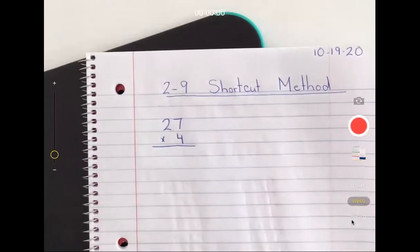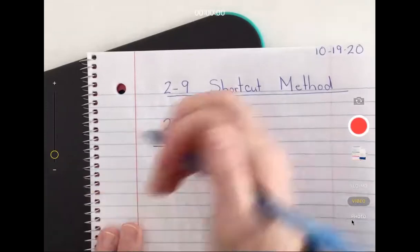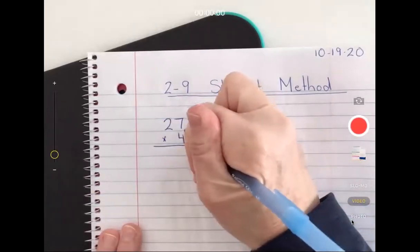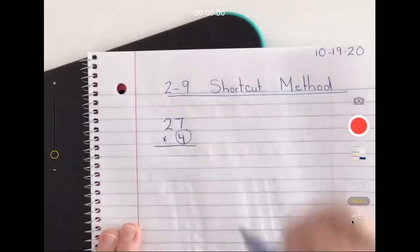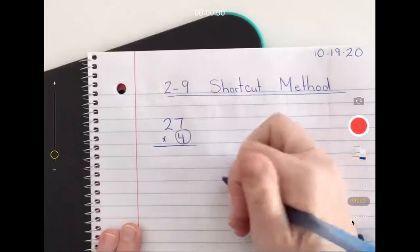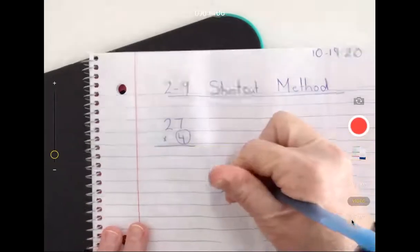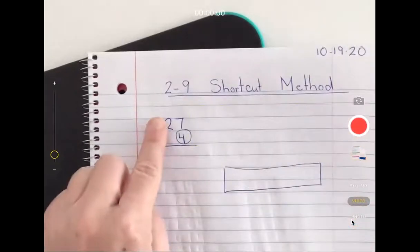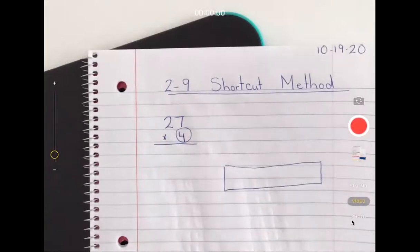The way I like to think about the shortcut method, just as before, the four is in charge. It's that single number and it's going to multiply just like it did in our area model to both the tens and the ones, just going in a little bit different order.